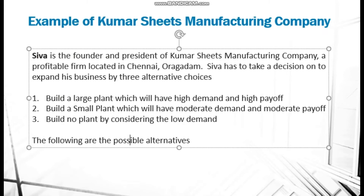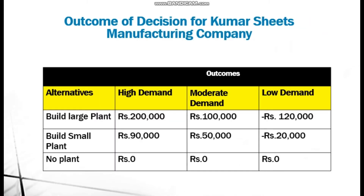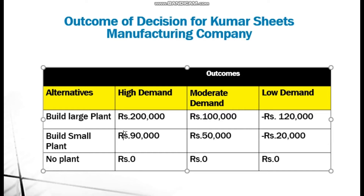The finance team gives three alternative outcomes. For the large plant: high demand yields a profit of two lakhs, moderate demand yields one lakh profit, and low demand results in a loss of one lakh twenty thousand. For the small plant: high demand gives ninety thousand profit, moderate demand gives fifty thousand profit, and low demand results in a twenty thousand loss. For the no-plant option, in all three demand scenarios there is zero profit or loss.